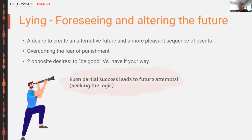Lying is always about foreseeing and altering the future — there is a desired outcome I cannot get by telling the truth, so I need to create an alternative path that may compromise the truth. I have to overcome my fear of punishment and suppress my desire to be good while doing what I need to do. If I'm successful, I will always try more and more — that's the addictive nature of lying, which we all know from different parts of our lives.